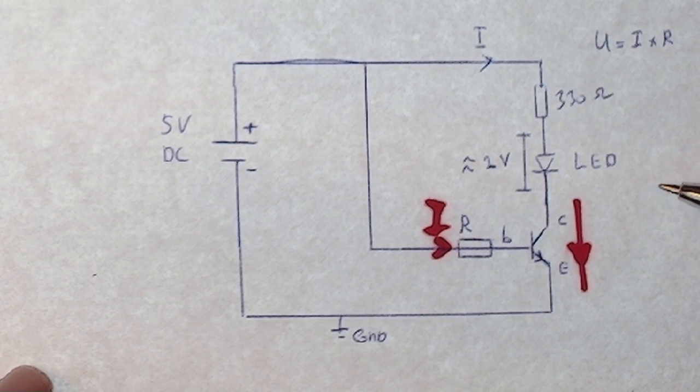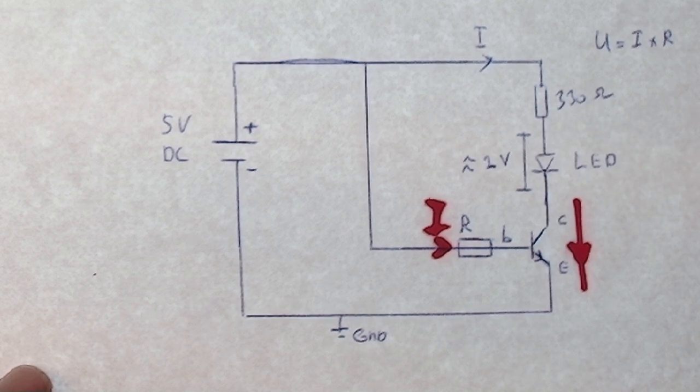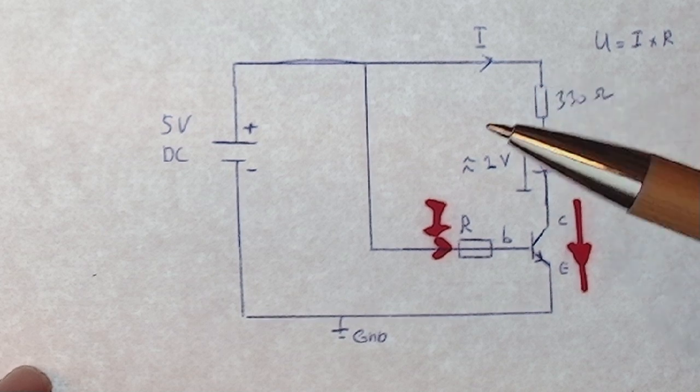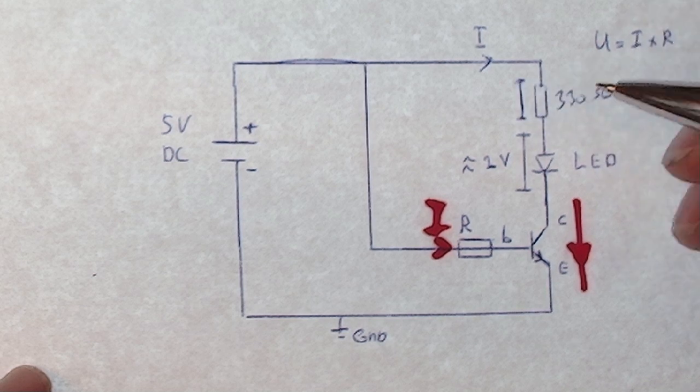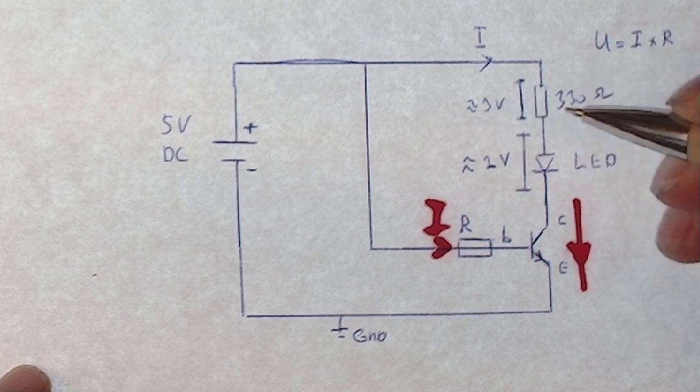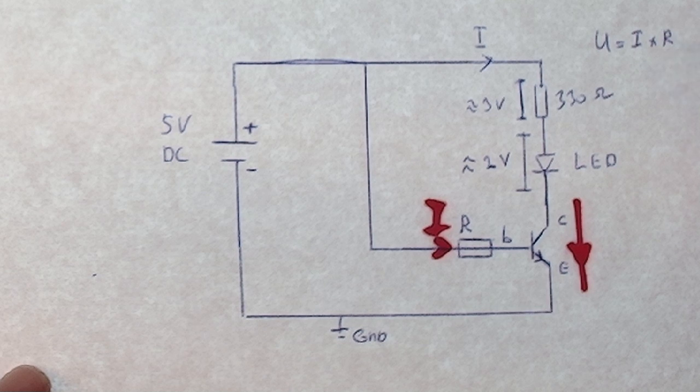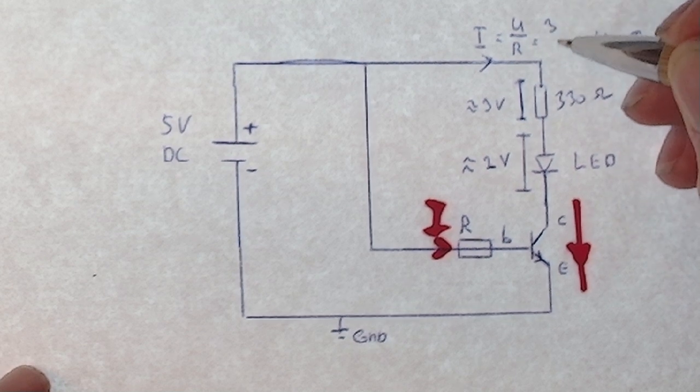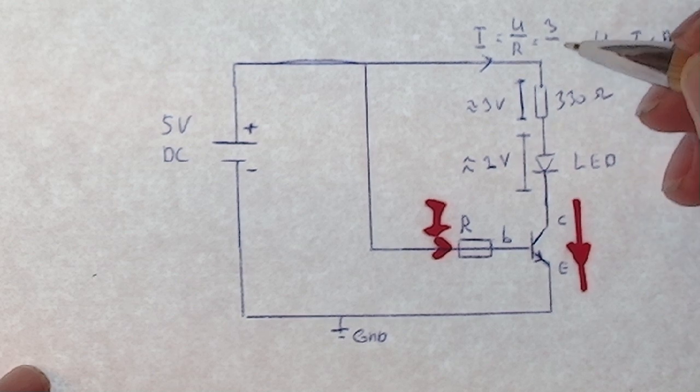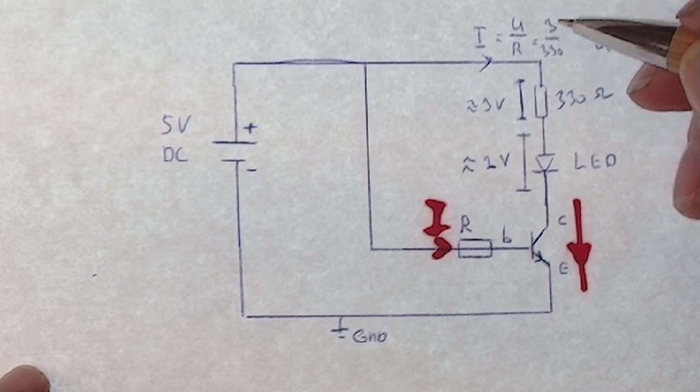The current. Now with a red LED we usually have a voltage drop of 2 volts, so in total we have 5 volts, that leaves 3 volts voltage drop on the resistor. So now we can determine the current, and in this case it's the voltage divided by the resistance, so it's 3 volts divided by 330, which is 9 milliamps.